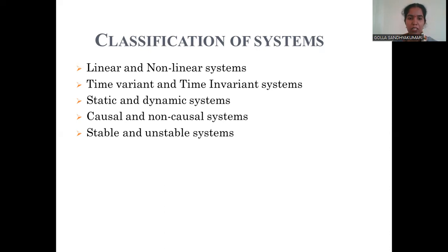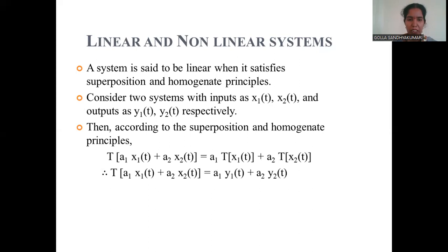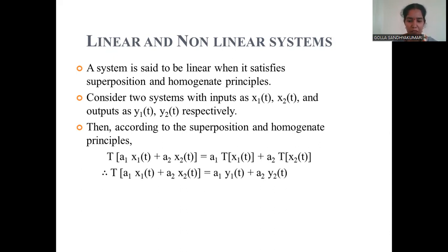A system is said to be linear when it satisfies the superposition principle and the homogeneity principle. If you consider two systems with inputs X1(t) and X2(t) and outputs Y1(t) and Y2(t), then according to superposition and homogeneity: T[A1·X1(t) + A2·X2(t)] = A1·Y1(t) + A2·Y2(t), where T represents the transformation applied to the signals.